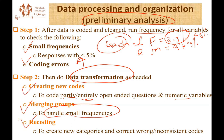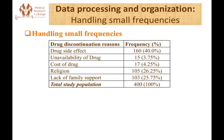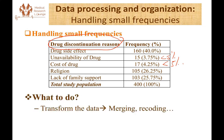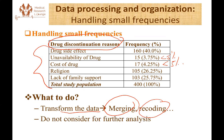All of these things can be done using the data transformation command on our statistical software. The two most important problems are handling small frequencies and transformation. For example, for drug discontinuation reasons, two variables have less than 5% response — these are small frequencies. We don't want to include them in regression analysis as-is, since it will lead to inaccurate results. We can either do data transformation by merging and recoding, or exclude the variable from regression while still presenting it in a descriptive table.